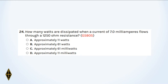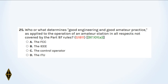How many watts are dissipated when a current of 7 mA flows through a 1,250 ohm resistance? And 25: Who or what determines good engineering and good amateur practice as applied to the operation of an amateur station?